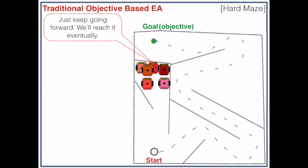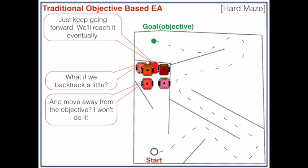These robots will just keep pushing forward, but they'll never get through that wall. Really the robots should backtrack a little, but that requires moving away from the objective, something they won't do.